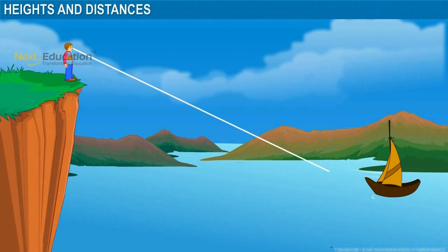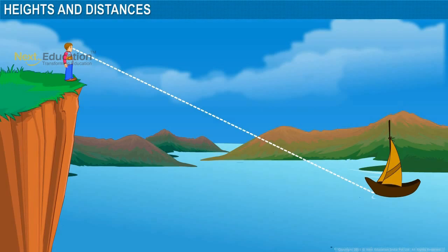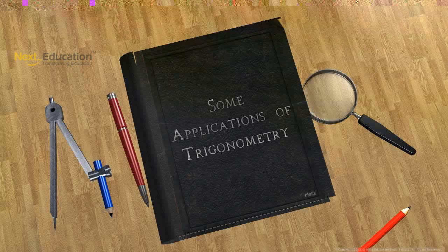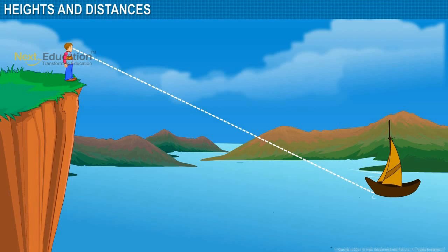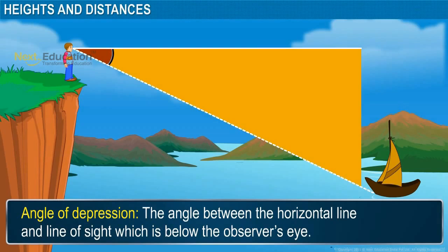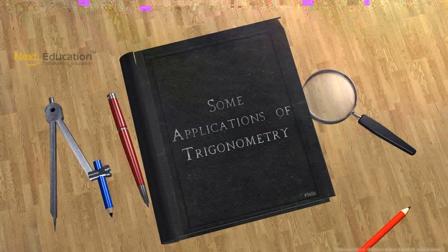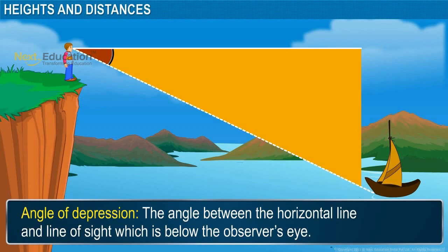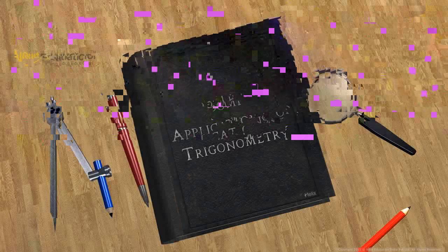Suppose the observer is standing on the edge of a cliff and observing a boat on the water. The line of sight will be as shown. Here, the angle between the horizontal line and line of sight, which is below the observer's eye, is called the angle of depression.